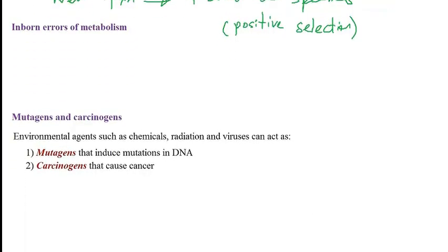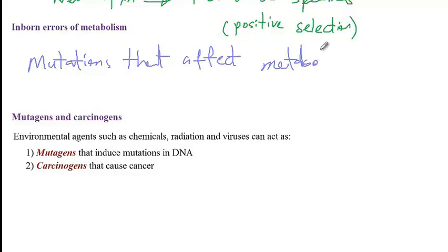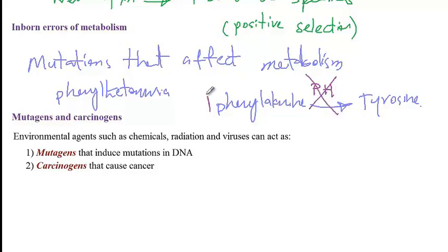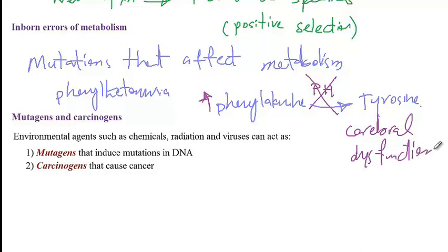Another terminology to know is inborn errors of metabolism — these refer to mutations that affect metabolism. One example is phenylketonuria. Normally, phenylalanine is converted to tyrosine with the help of the phenylalanine hydroxylase enzyme. If there is a mutation in phenylalanine hydroxylase, there would be accumulation of phenylalanine in these patients, resulting in cerebral dysfunction. This is an example of an inborn error of metabolism where a mutation has changed the metabolism.